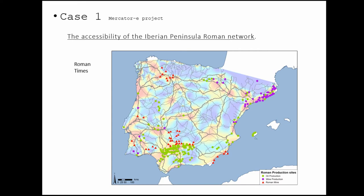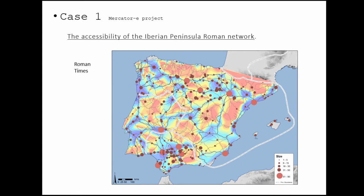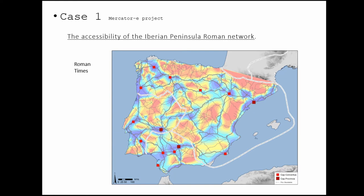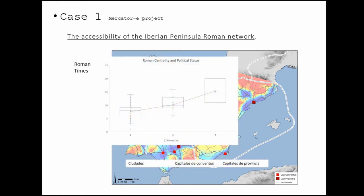For Roman times, for example, we can mix this connectivity information with the most productive areas of the Iberian Peninsula — in purple you see all of the sites which most produce wine, in green we have oil production, and in red there are Roman mines. We also can compare this with the size of cities or the concentration of cities, and also compare them with the political situation of each city. Here you can see in the big squares the provincial capitals, and in red the conventus capitals, which were small territories within these provinces. With this, we can analyze the relationship between the political status of cities in one period and their level of connectivity.